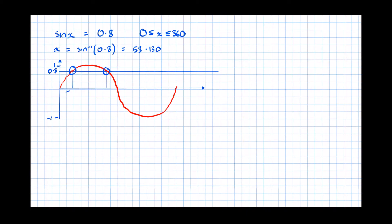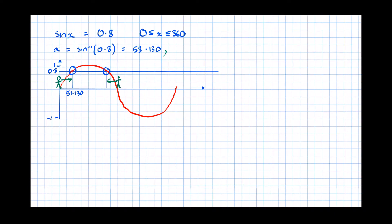Our first solution we worked out to be 53.130. To find the other one, we're going to use the symmetry of the graph. Imagine someone standing right at the start of the graph — they have to walk 53.130 to reach the first solution. The corresponding point at the other side of the hill means that person walks the same distance, 53.130. Therefore, the second solution is 180 minus 53.130.